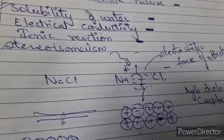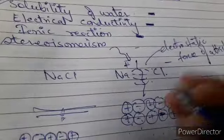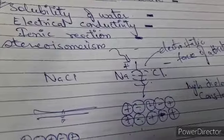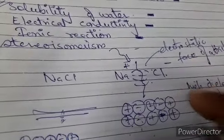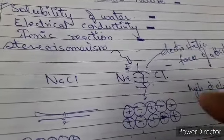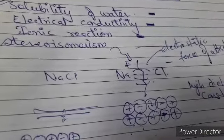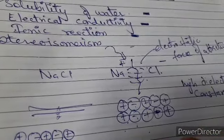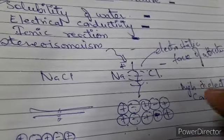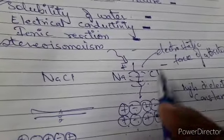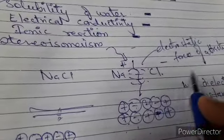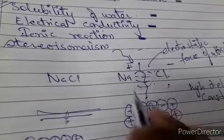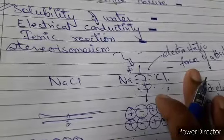In organic solvents such as benzene, hexane, or carbon tetrachloride, ionic compounds are insoluble or very poorly soluble. This is because organic solvents have a low dielectric constant, unlike water which has a high dielectric constant. The low dielectric constant means organic solvents cannot weaken the electrostatic force of attraction holding the ions together in the compound.